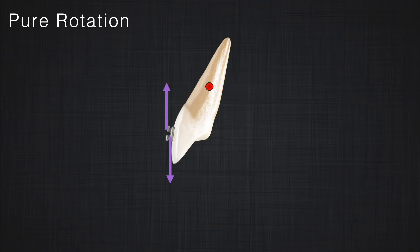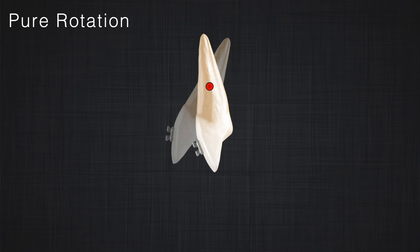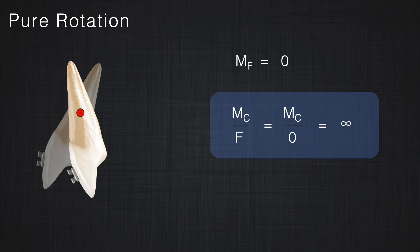What happens if we apply only a couple with no force? In that case, we have pure rotation, meaning the center of resistance does not move. In the equivalent system, there is only one moment — the moment produced by the couple — with no force and no moment of the force. If asked for the couple to force ratio, the couple magnitude is divided by zero force, which mathematically becomes infinity. So when the force in the system is zero and we have only a couple, the result is pure rotation.